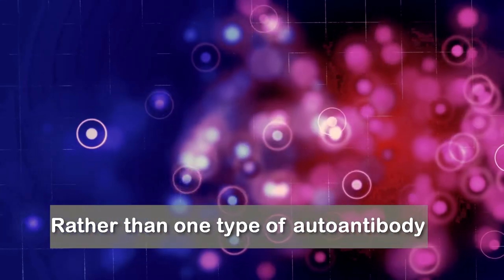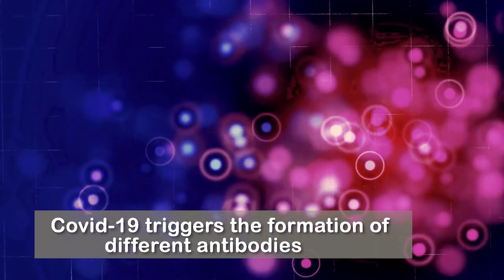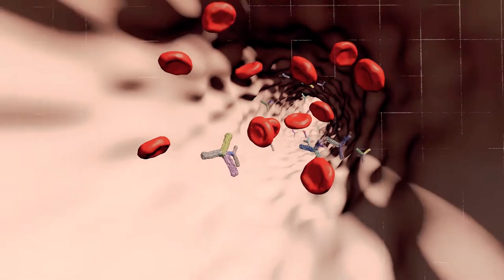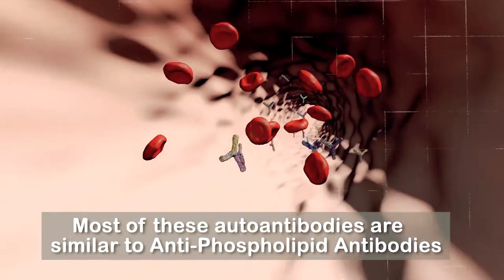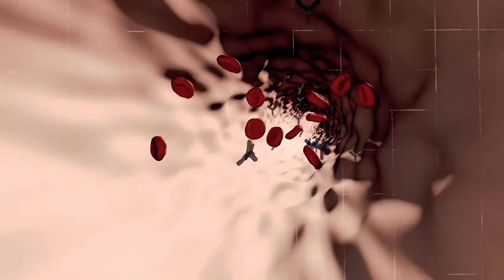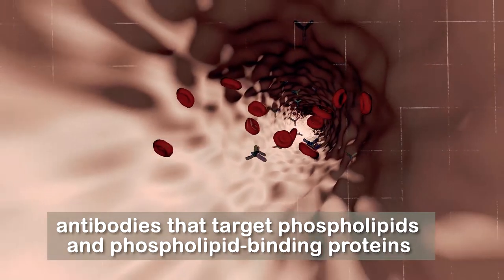Rather than one type of autoantibody, COVID-19 triggers the formation of different antibodies in the same patient. Most of these autoantibodies are similar to those produced in antiphospholipid syndrome. Antiphospholipid syndrome is characterized by antibodies that target phospholipids and phospholipid binding proteins in the body.